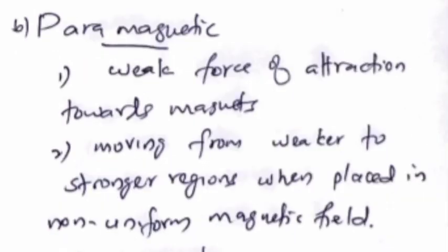Moving from stronger to weaker regions when placed in non-uniform magnetic field. Paramagnetic - weak force of attraction towards magnets. Moving from weaker to stronger regions when placed in non-uniform magnetic field.